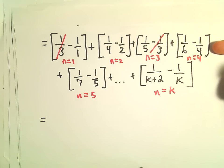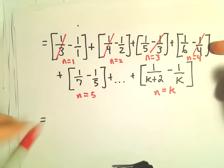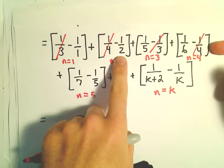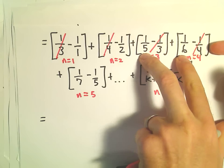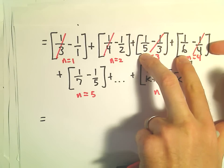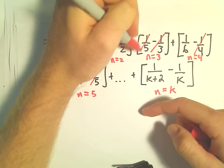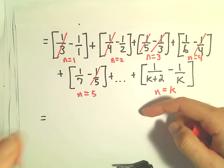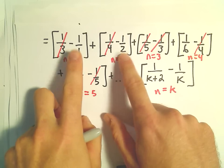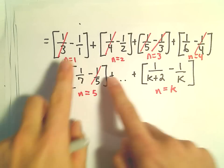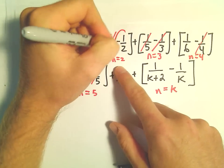If we go up to n equals 4, now the negative 1 fourth will cancel. So we still have negative 1 and negative 1 half, but now when we stop at n equals 4, we would be left with a fifth and a sixth. If we go up to n equals 5, well, now the negative 1 fifth and positive 1 fifth would cancel. So we would still be left with a negative 1, negative 1 half. I don't see how these are ever going to cancel out, right? There's nothing ever to cancel out the negative 1 and the negative 1 half.